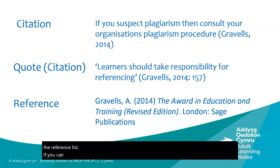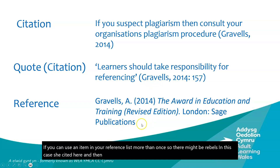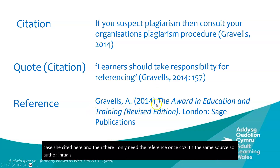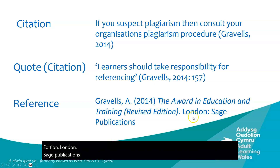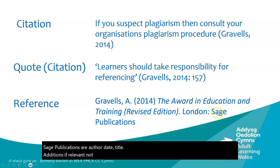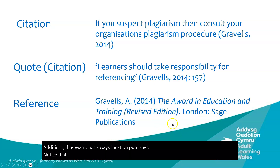You can reference an item in the reference list more than once — if Gravels is cited in two places, you only need the reference once because it's the same source. The format is: author, initials, date in brackets, title — in this case Award in Education and Training, Revised Edition — location, publisher. So: author, date, title, edition if relevant, location, publisher. Notice that the title is in italics.